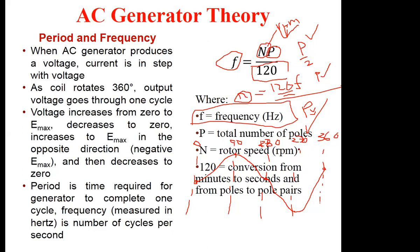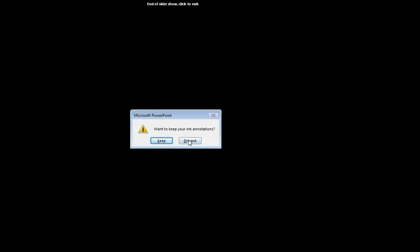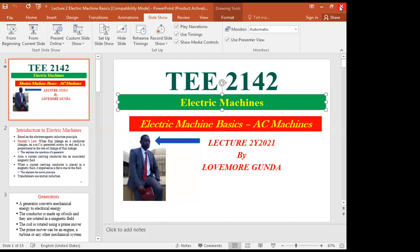The peak voltage occurs at 90 degrees, and the peak-to-peak voltage is the voltage between the crest and the trough — as you know from AC theory. In general, I've explained how an AC generator operates. Once you get the concept of the interaction between the magnetic field and the conductor due to relative motion between the two, it explains the generation of AC. It also explains the movement of the conductor — that's why I used the AC generator as an example, because it covers everything.